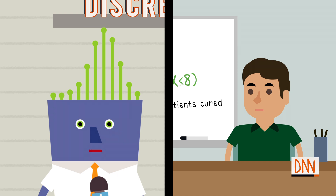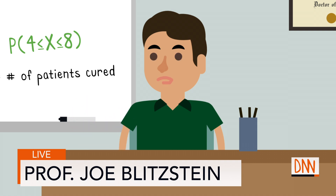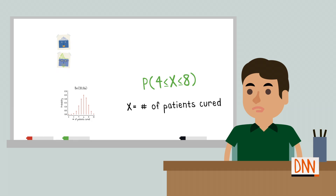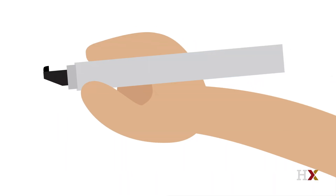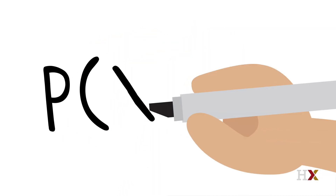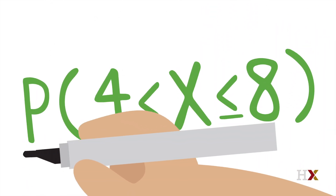You mean, who distributes the treatment to the clinic? We should try to find out as much as we can about the treatment, but I meant distribution in the statistics sense. When we are looking at a quantity that can take on various possible values, the distribution tells us how likely any particular value or range of values is. Let's say we want to predict X, the number of patients who will be cured tomorrow. The distribution of X specifies the answers to questions like: what's the probability that X is 6? Or what's the probability that X is between 4 and 8?